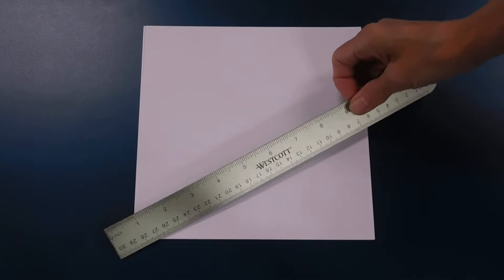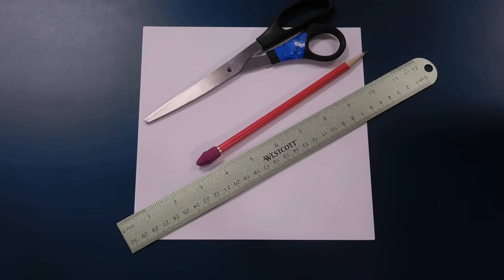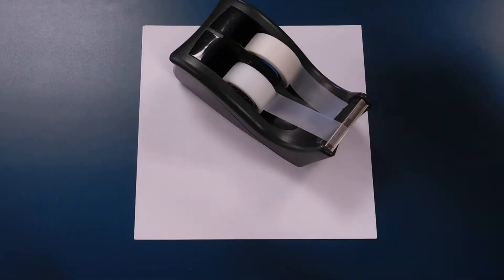We are going to use paper. I have drawing paper here, and I have cut it into a square. Mine is 8 inches by 8 inches. You might need a ruler, a pencil, a pair of scissors, and some tape.